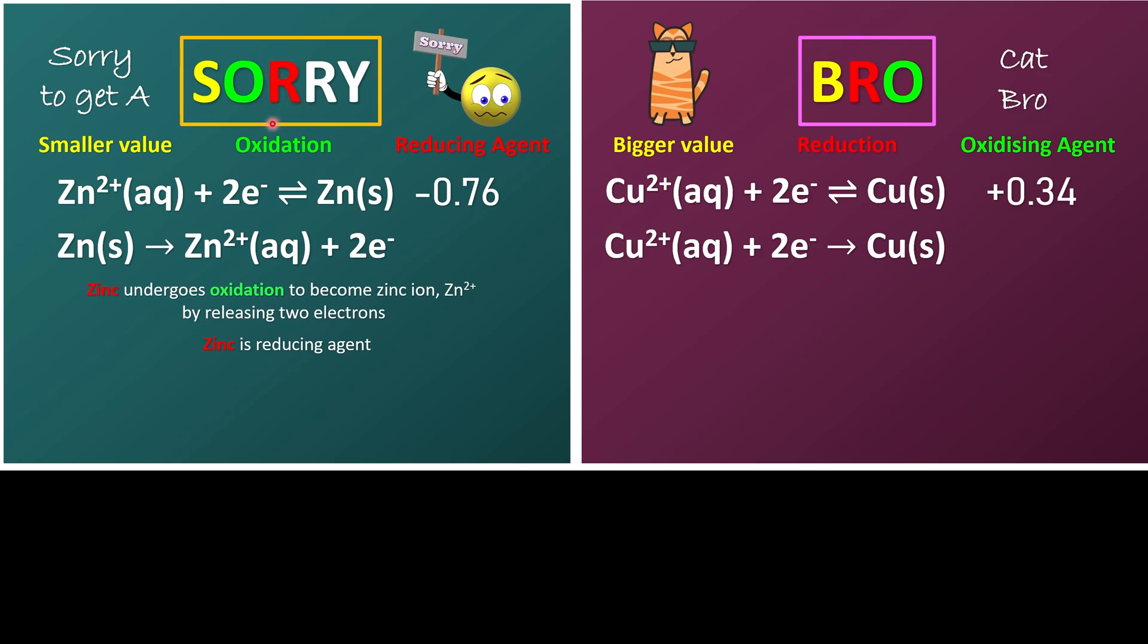So what can we observe from here is zinc in the beginning is a solid, and now they dissolve to become zinc 2+ ion. So what we can see is the zinc electrode is getting smaller. As we know, the zinc solid dissolves to become the zinc 2+ ion.